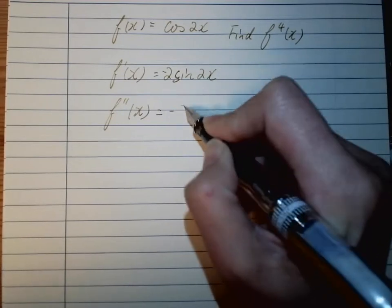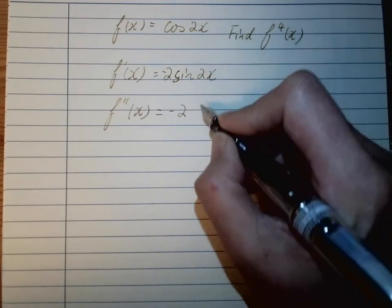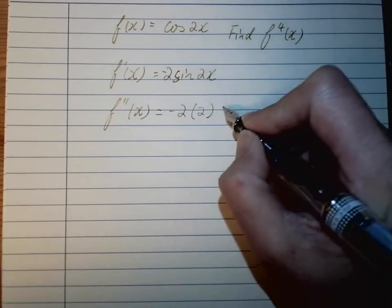The second time, we have -2 times 2, and sine becomes cosine. So f''(x) = -4cos(2x).